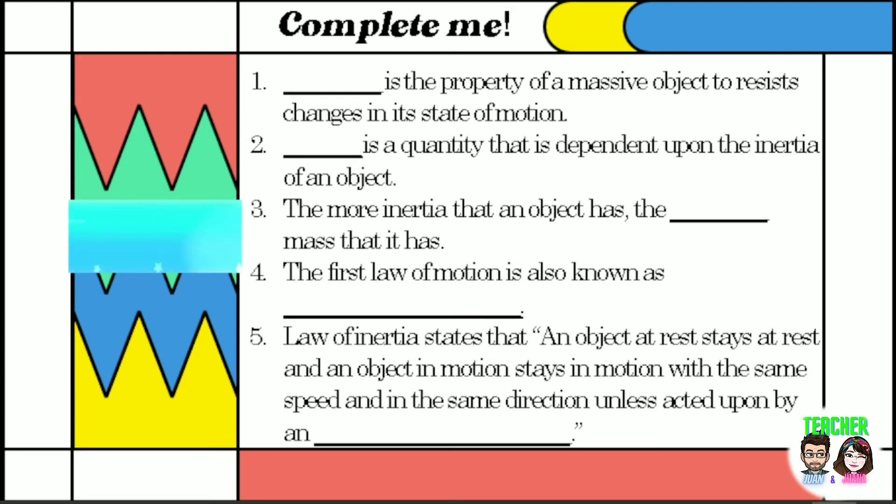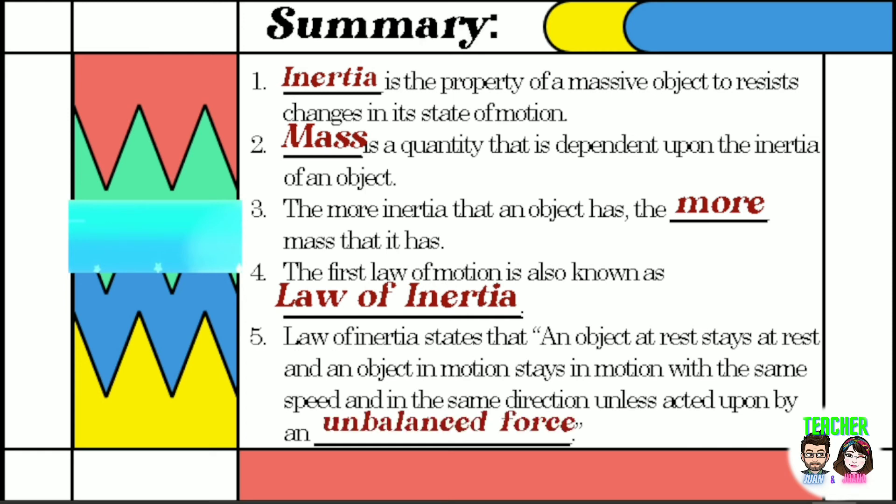Let us check your answer. Number 1, blank is the property of a massive object to resist changes in its state of motion. If your answer is inertia, then you are correct. Number 2, blank is a quantity that is dependent upon the inertia of an object. If your answer is mass, you are correct. Number 3, the more inertia that an object has, the blank mass that it has. If your answer is more, you are right. Number 4, the first law of motion is also known as blank. If your answer is law of inertia, you are great. Number 5, law of inertia states that an object at rest stays at rest, and an object in motion stays in motion with the same speed and in the same direction, unless acted upon by in blank. If your answer is unbalanced force, you are correct. This is the summary of our lesson for today.